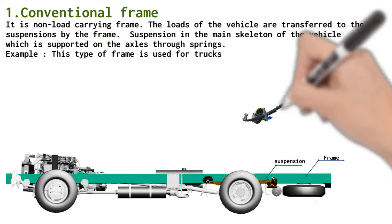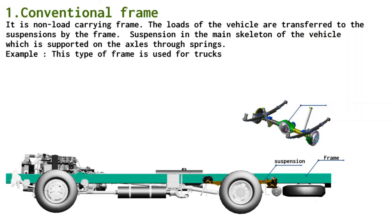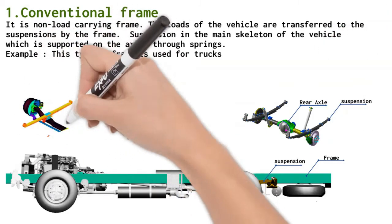The body is made of flexible material like wood and isolated from frame by inserting rubber mounting in between. The frame is made of channel section or tubular section or box section. This type of frame is used in commercial vehicles like trucks and buses.